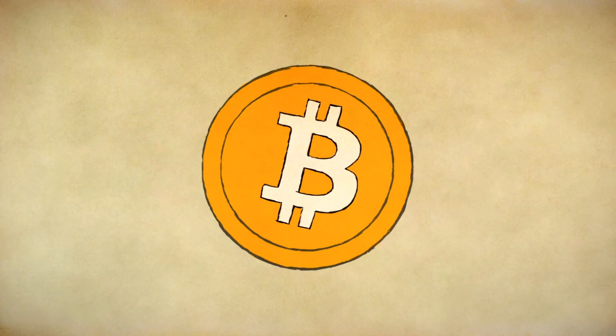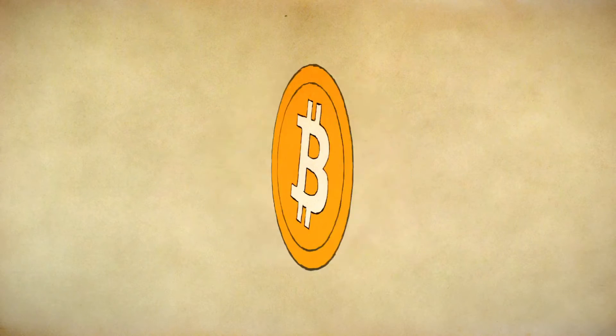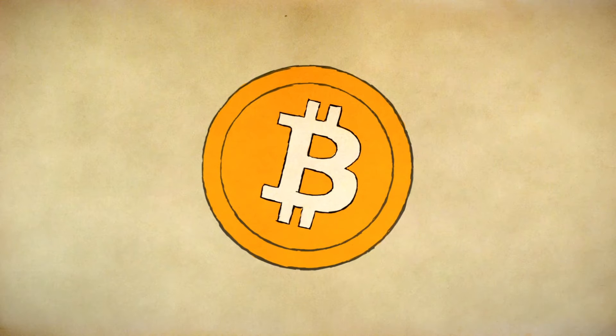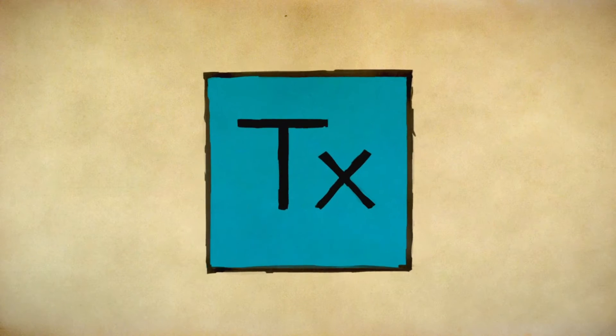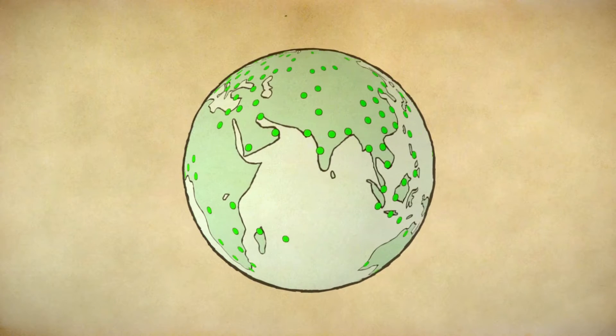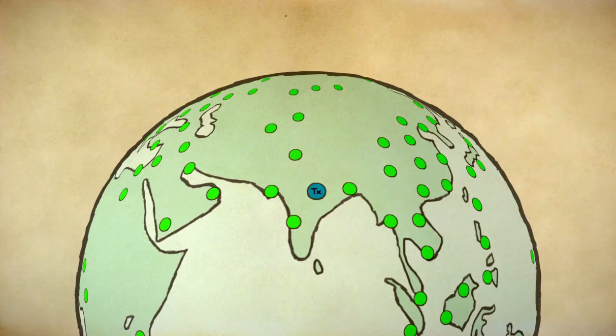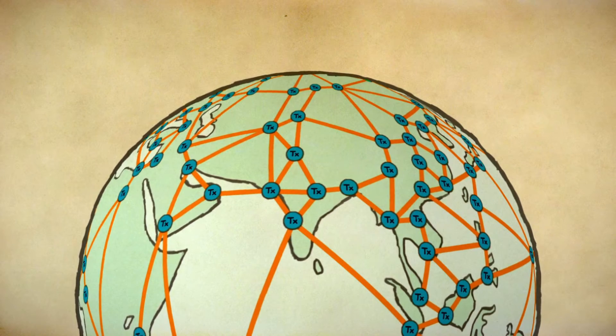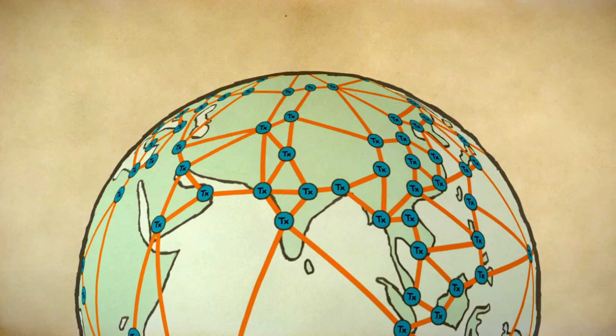You all know Bitcoin. It's our secure, inflation-proof, decentralized currency. You make a transaction and it gets published to the global Bitcoin network. Bitcoin nodes all around the world forward that information to each other, until seconds later the whole world knows about your transaction.